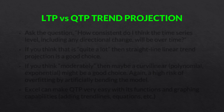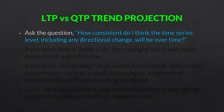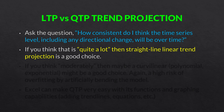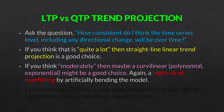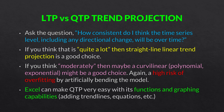Linear trend projection versus quadratic trend projection. Ask yourself: how consistent do I think the time series level, including any directional change, will be over time? If the answer is quite a lot, then a straight line linear trend projection is a good choice. If only moderately, then maybe a curvilinear model might be a good choice. But as I mentioned in the last video, when we start curving our models, we have a high risk of overfitting. So we have to be very careful. Luckily, Excel can make QTP very easy with its functions and graphing capabilities, such as adding trend lines, equations, and so on.